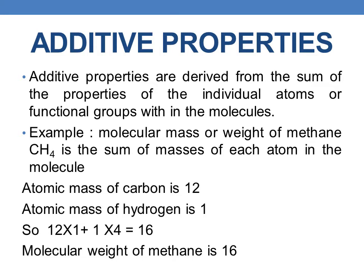Here, let us discuss about the molecular weight of methane. We all know that the formula for methane is CH4, so it contains one carbon atom and four hydrogen atoms. The atomic mass of carbon is 12, whereas the atomic mass of hydrogen is 1. So the molecular weight, which is the sum of individual atomic masses, is 12×1 + 1×4, which equals 16. So the molecular weight of methane is 16.